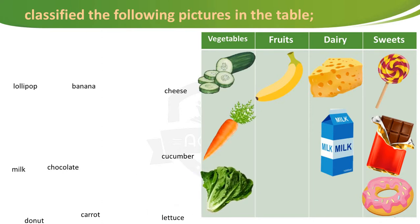As you see, we put cucumber, carrots, and lettuce in the vegetables, and fruits like banana. Dairy is anything that has milk, like cheese which is made from milk, and milk is ready milk. And sweets like lollipop, chocolate, and donut. Thank you.